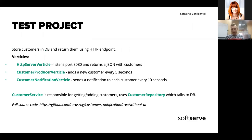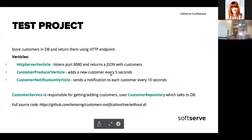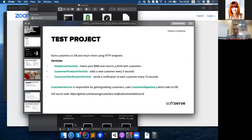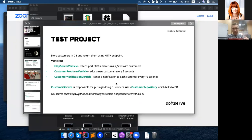I've created a test project — a very simple one. It stores customers in a database, has a REST endpoint that returns all customers, and there are three Verticles: one responsible for the REST API, another one produces customers, and the third notifies every customer from the database. We have a service responsible for working with customers and repositories. Let me quickly show you this project to have a clearer overview.